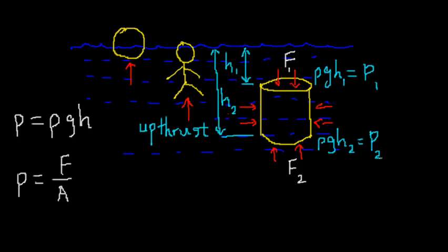Now as I said, the upthrust comes from the force at the bottom being bigger than the force on the top. So that means the upthrust is just the difference between the two forces. I'll use the symbol U to represent the upthrust. So U therefore must be equal to F2, the lower force, minus the upper force, F1.